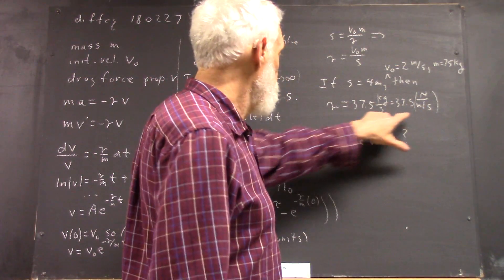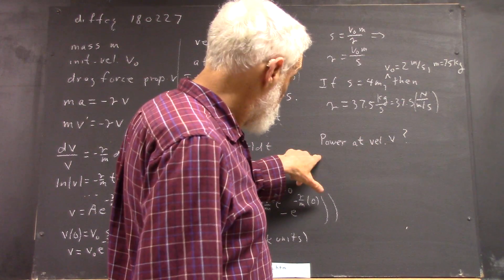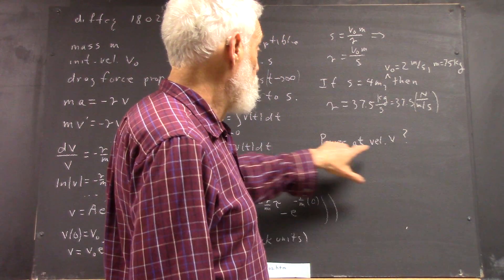So given this information, the calculation of gamma is very simple. So now let's find the power at velocity V.